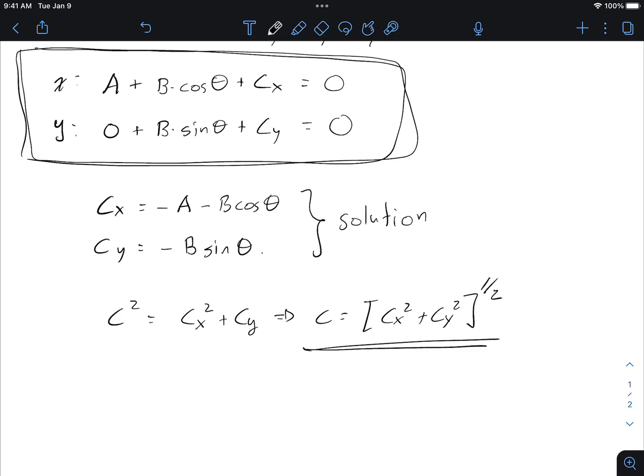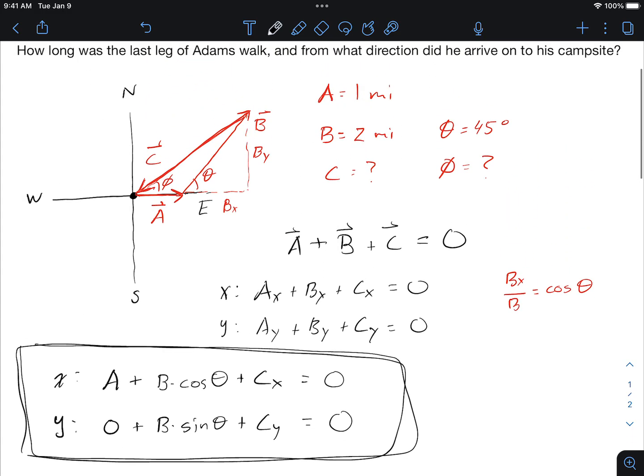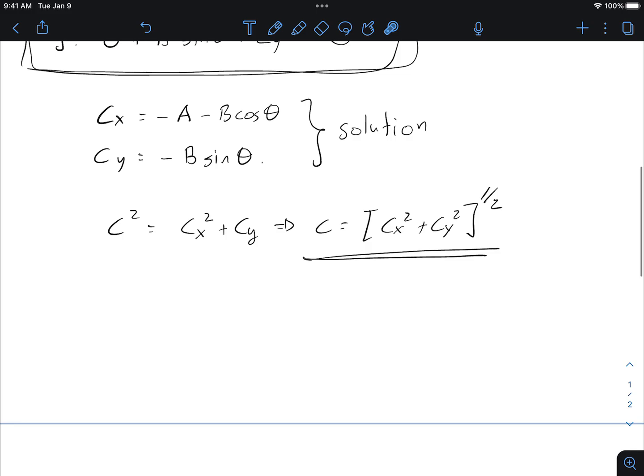What about the angle phi? Well let's go back to my picture. There's a nice right triangle here. All of this is c sub x. This is c sub y. And so the tangent of the angle phi is going to be opposite over adjacent.